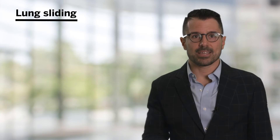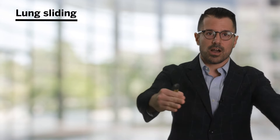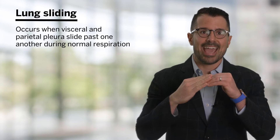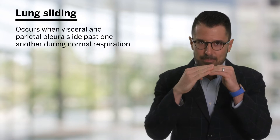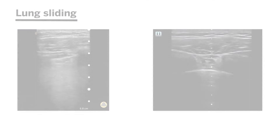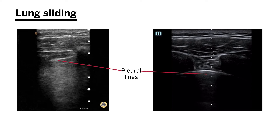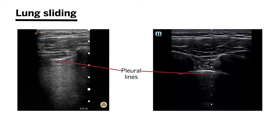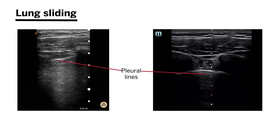Next up is lung sliding. Lung sliding refers to the effect we see when visceral and parietal pleura are apposed to each other and sliding past one another during normal respiration. Tiny microscopic imperfections in the pleura manifest as tiny little ants marching on a log. Focus on that bright pleural line and note these tiny little granules that seem to be moving with respiration — that is sonographic evidence of lung sliding, which is important for evaluating diagnoses like pneumothoraces.